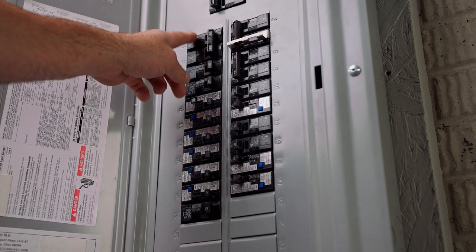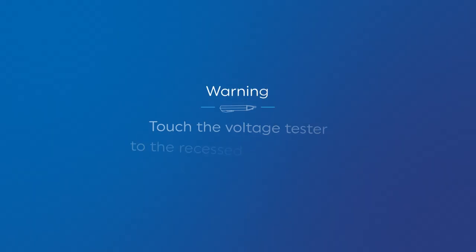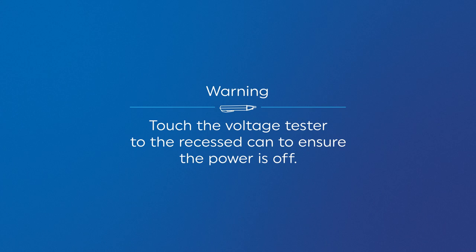Then, before you continue, turn off the power source at the main circuit breaker and touch the voltage tester to the inside of the can to ensure the power is off.